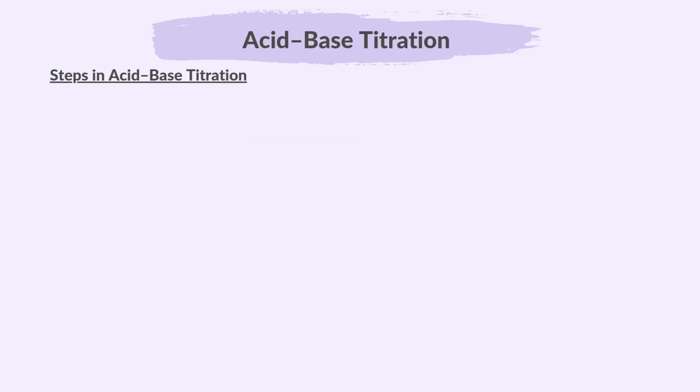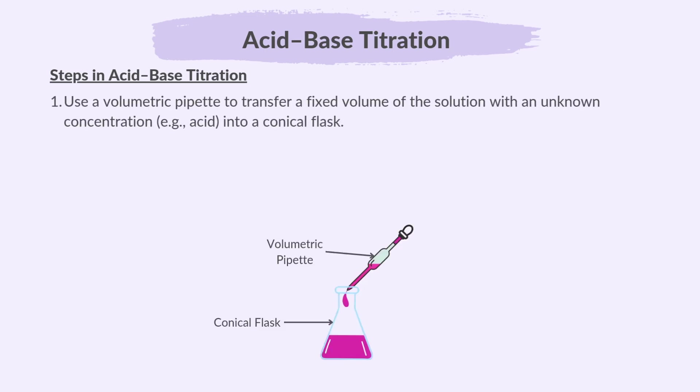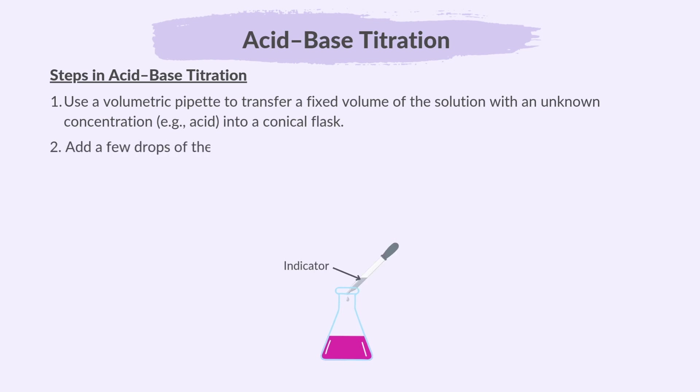Now let's look at the steps in acid-base titration. Use a volumetric pipette to transfer a fixed volume of the solution with an unknown concentration, for example acid, into a conical flask. Add a few drops of suitable indicator to the solution in the flask.